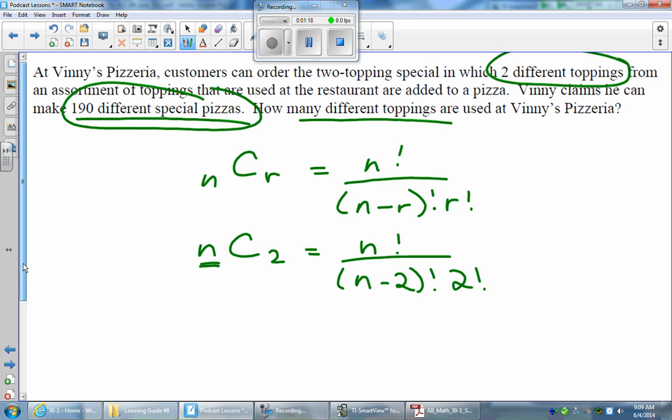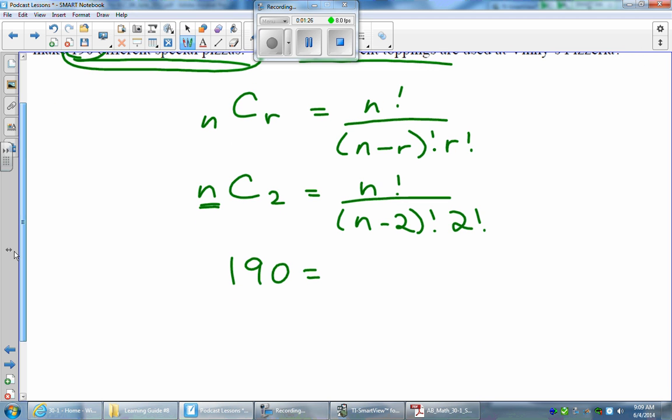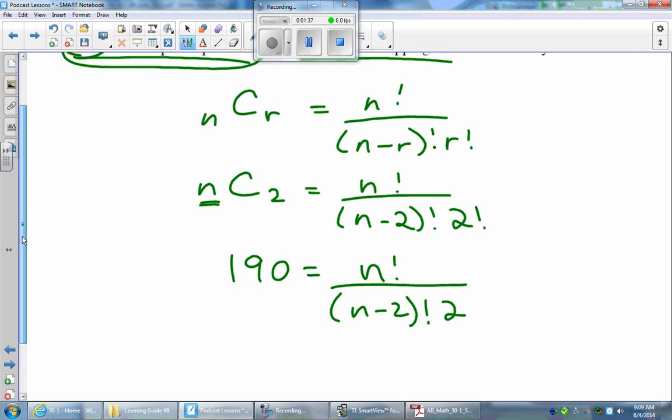We know the number of combinations. Vinny says that he has 190 different combinations he can make. So 190 would be our N choose 2 value. So here's my equation. 190 equals N factorial over N minus 2 factorial, and 2 factorial is just 2 times 1, which is just 2. So I won't use the factorial there anymore.